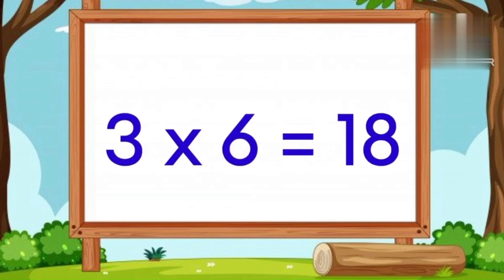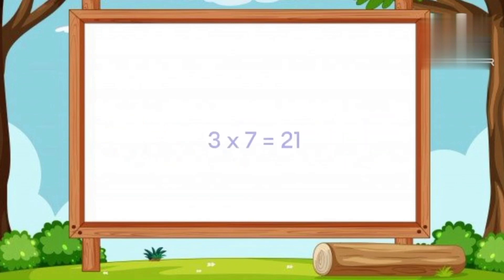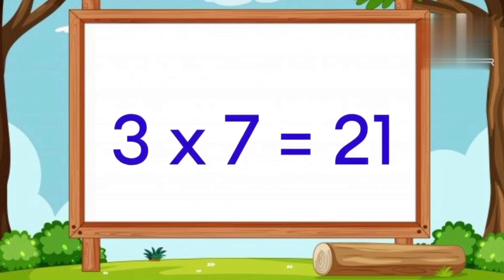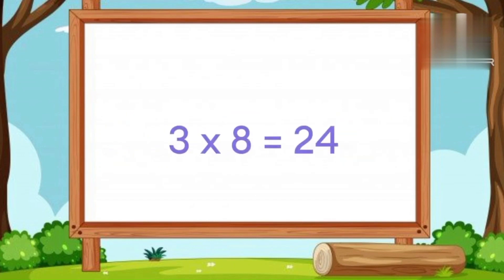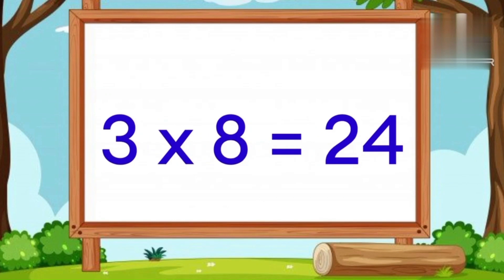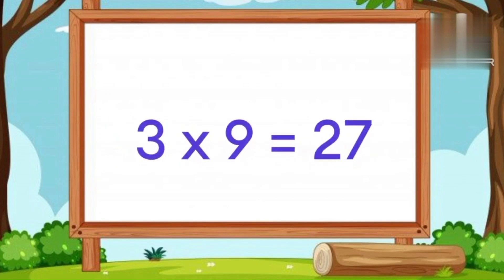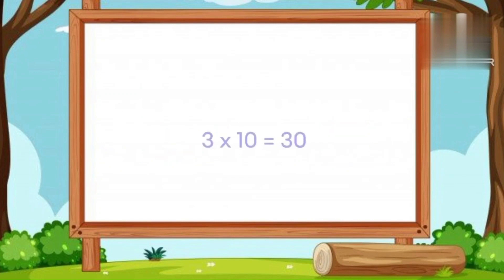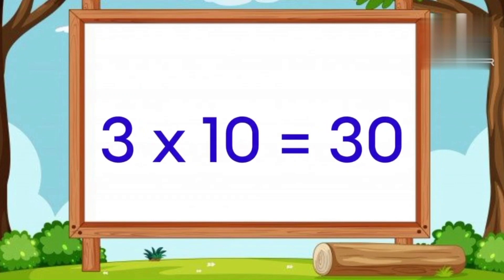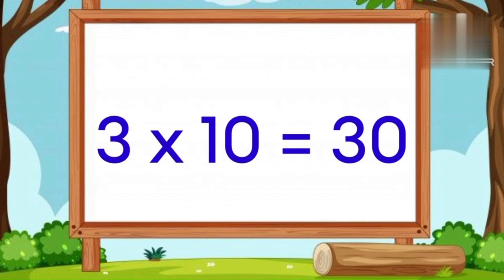3 6's are 18. 3 7's are 21. 3 8's are 24. 3 9's are 27. 3 10's are 30.